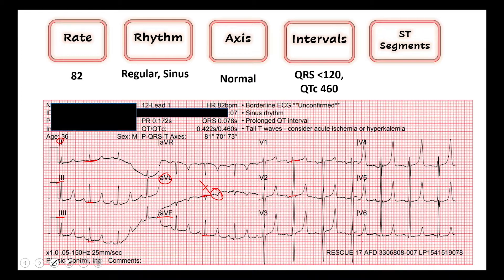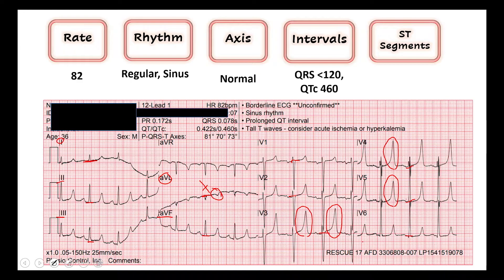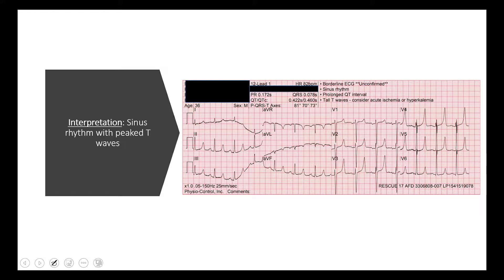In the anterior leads, pretty close to the baseline — maybe about one box of elevation in V3, and you're allowed to have that. In V2 and V3, to count for a STEMI equivalent you need two boxes of elevation with reciprocal changes, and we know there are no reciprocal changes. One millimeter of elevation is acceptable. We don't see any in the other leads, no inverted T waves or anything concerning. But something does stick out: a very large, very spiky T wave that goes all the way across the precordium, coming up to a really high point with lots of energy. This is very concerning for hyperkalemia.